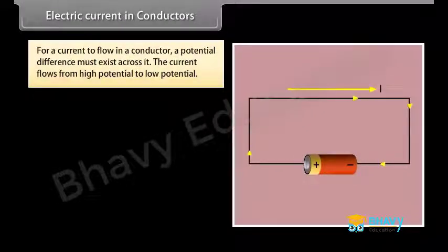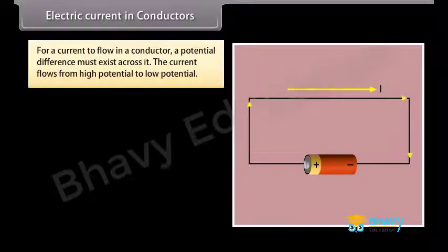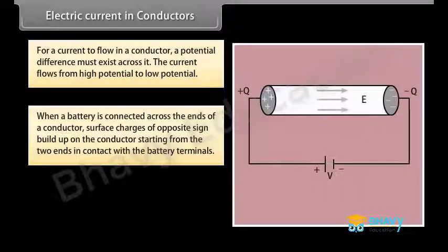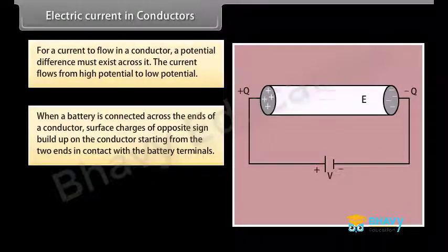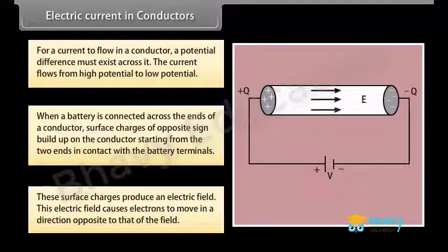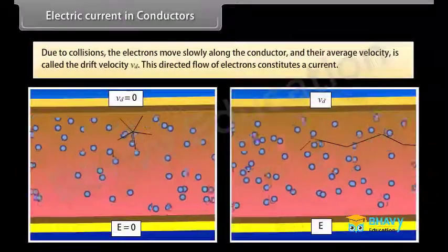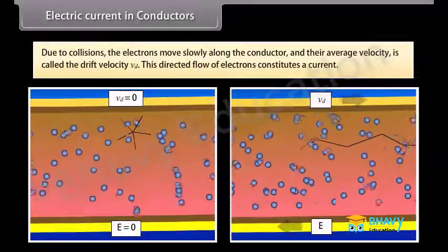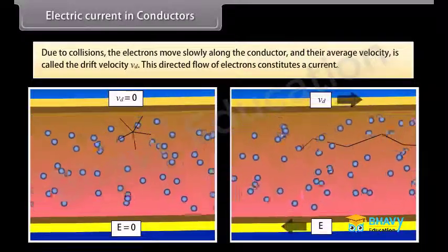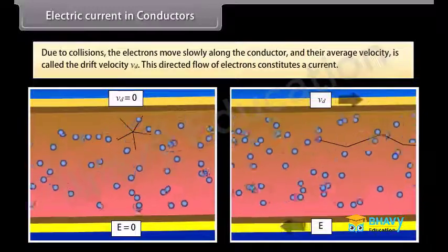Electric current in conductors: For a current to flow in a conductor, a potential difference must exist across it. The current flows from high potential to low potential. When a battery is connected across the ends of a conductor, surface charges of opposite sign build up on the conductor starting from the two ends in contact with the battery terminals. These surface charges produce an electric field, which causes electrons to move in a direction opposite to that of the field. Due to collisions, the electrons move slowly along the conductor and their average velocity is called the drift velocity, Vd. This directed flow of electrons constitutes a current.